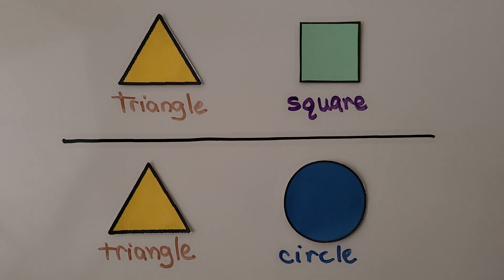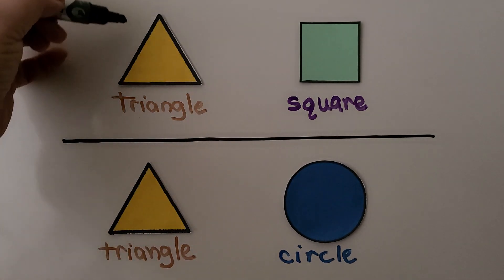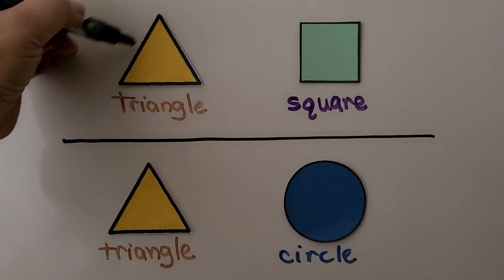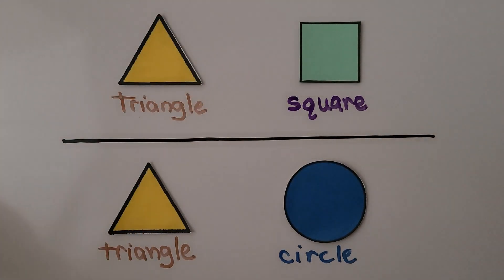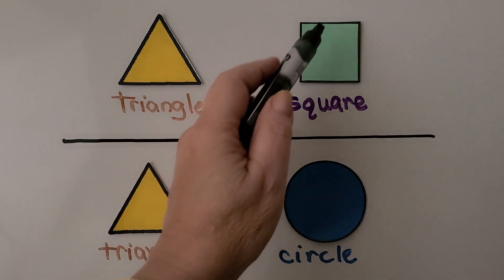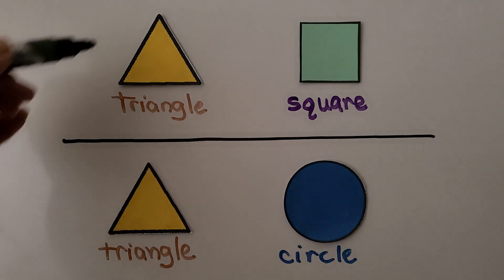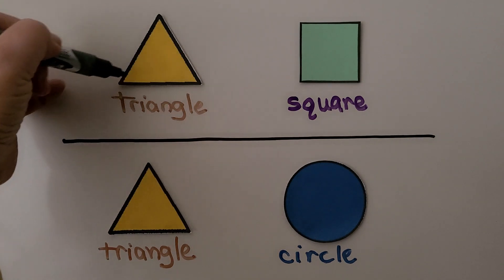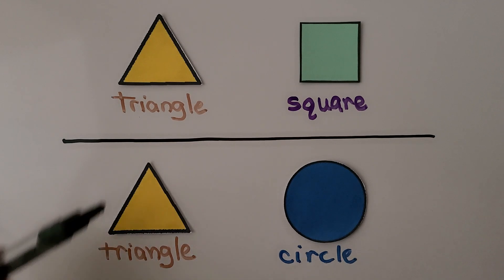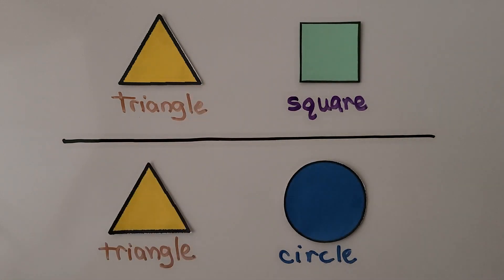We can compare shapes by seeing how they're alike or how they're different. A triangle and a square are alike because they both have straight lines for their sides. A triangle and a square are different because a triangle has three sides and a square has four sides. They're the same because they both have vertices — corners — but they're different because a triangle has three vertices and a square has four vertices.